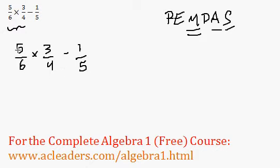So 5 times 3 is 15. 6 times 4 is 24 minus the 1 fifth. Now I'm just going to quickly simplify 15 over 24 dividing top and bottom by 3. So we get 5 over 8.